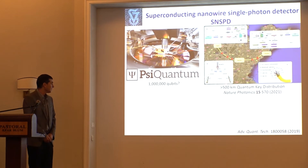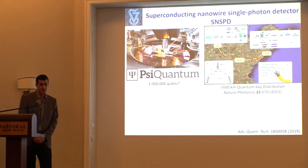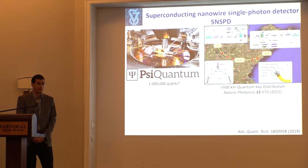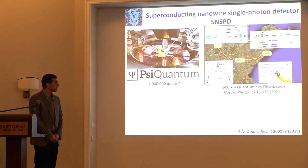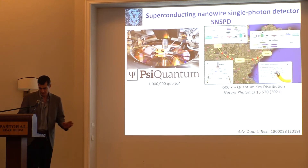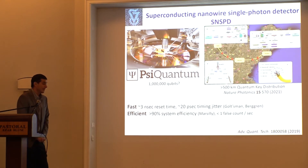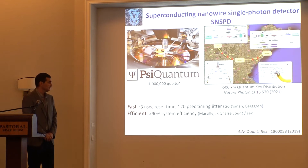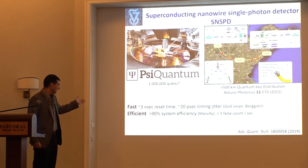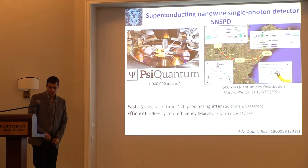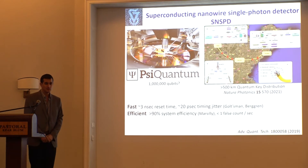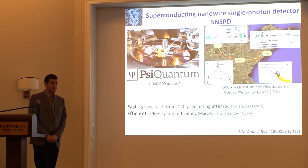There is also a very promising company, PsiQuantum, that is very ambitious about making one million qubits on one chip. When I talk to their founders, the main hurdle is the photon detectors — these single photon detectors. The rest they claim is known and difficult engineering. So why is this technology so advantageous? Because it's very fast and very efficient.